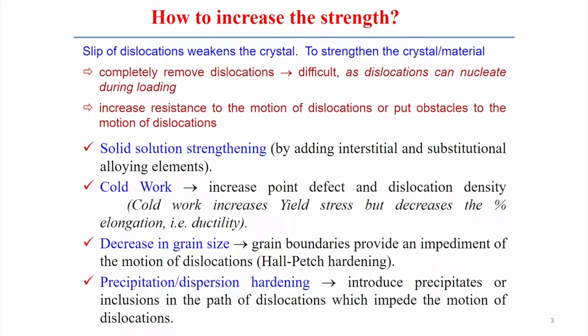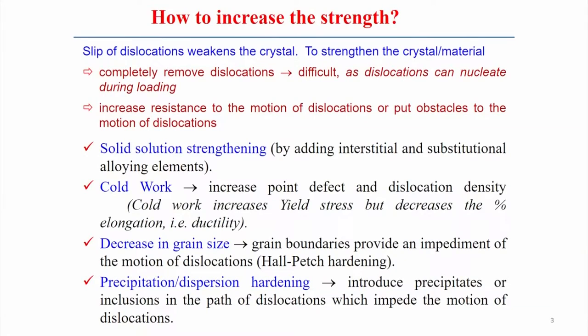There are two possible ways. First, if it is possible to completely remove the dislocations, then in the absence of dislocations the strength level may be higher. But practically it is very difficult, as dislocations can be generated during deformation. So ideally it is not possible to make a structure exactly dislocation-defect-free. Another option is to increase resistance to the motion of dislocations, or to put obstacles to dislocation motion, which imparts or increases the strength level.